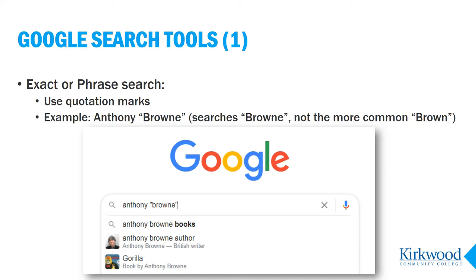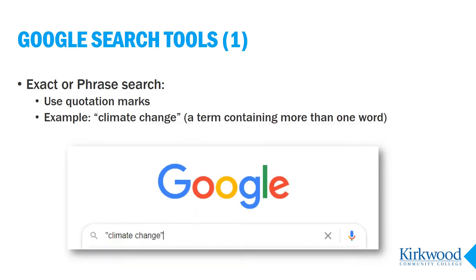So if I put a single word in quotation marks, as shown in this example, Google will not also search for alternate spellings or for synonyms. And if I put more than one word in quotation marks, Google will search those words as a phrase in that exact order.